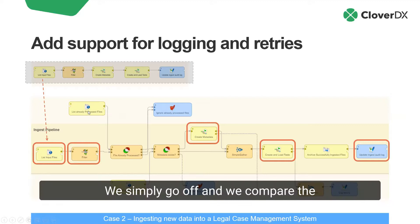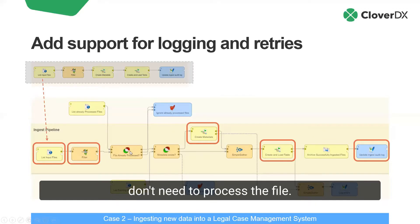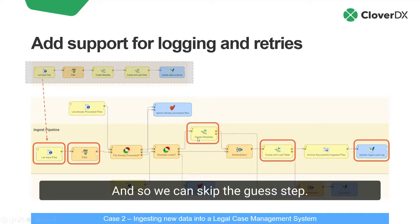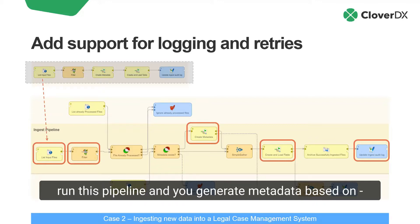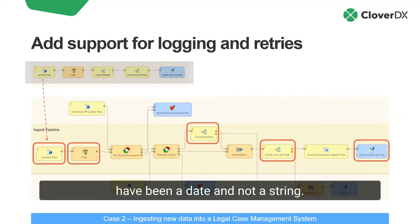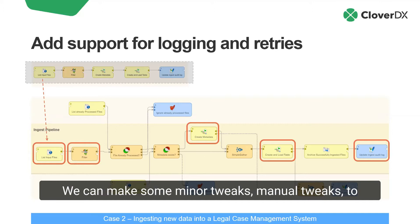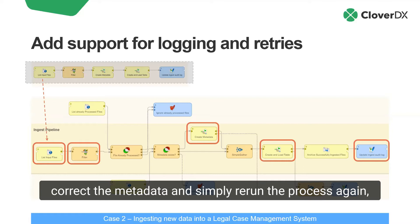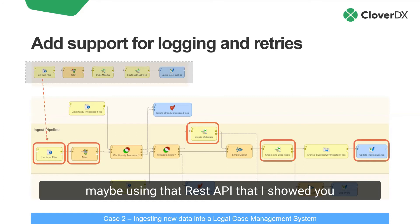Here's the check inside the CloverDX pipeline: have we already processed this file? We simply compare the list of files we've already processed with the list of files we need to process. If there's a match, we don't need to process the file. Same for the metadata — if we already have metadata for this file, we don't need to guess, and we can skip that step. That means if the first time you run this pipeline the metadata guess was wrong, you can manually intervene and change it — like, this should have been a date and not a string, or this is a float and not a numeric. We can make minor manual tweaks to correct the metadata and simply rerun the process, maybe using that REST API I showed you where you can run pipelines on demand.